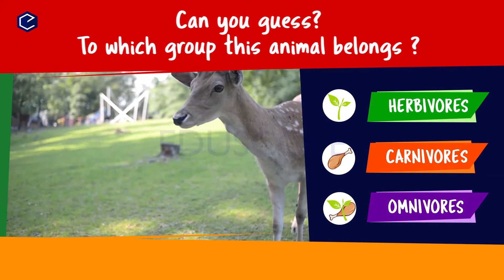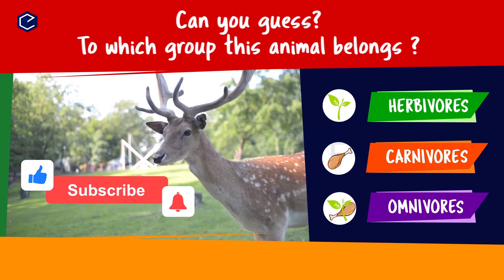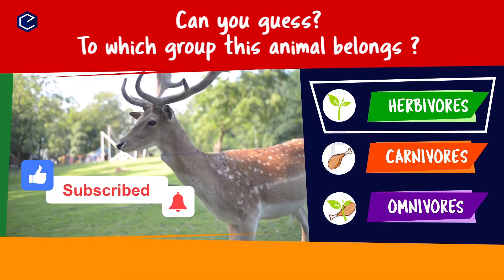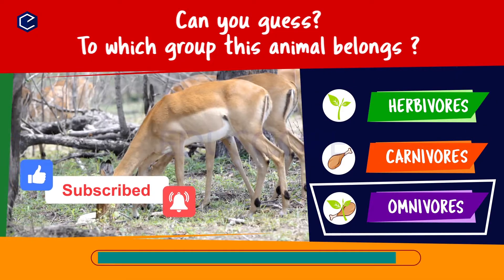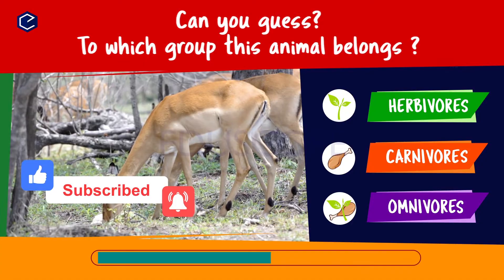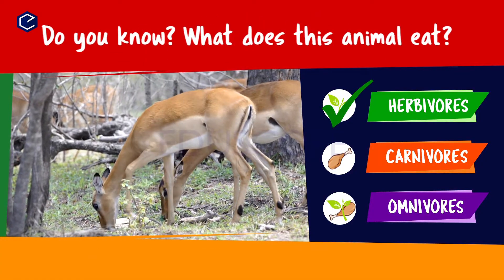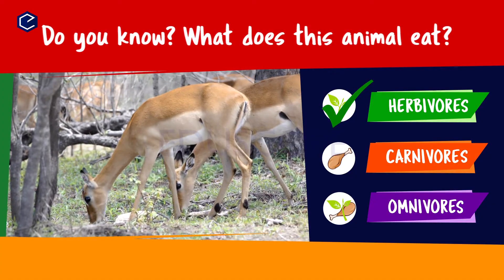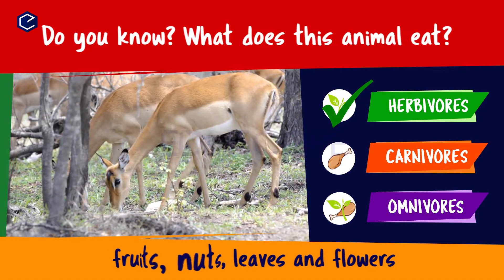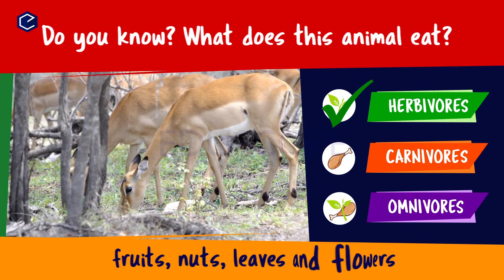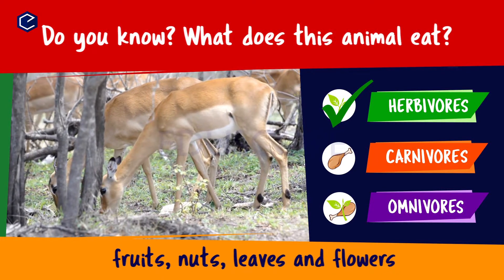Can you guess to which group this animal belongs? Herbivores, carnivores, omnivores. Do you know what this animal eats? A deer eats fruit, nuts, leaves and flowers. So deer is a herbivore.